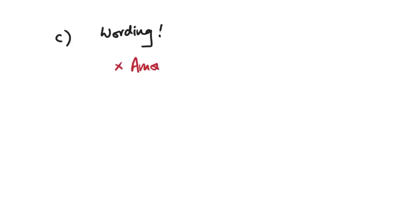Finally, some reminders about wording. One of the most important words to avoid is 'amount.' Many people say things like 'the amount of potatoes' or 'the amount of water' — don't use this word because 'amount' could mean many different things. Similarly, avoid saying 'how much.' In mark scheme guidance, examiners are specifically told to ignore the use of these words, so it's really important to know what to use instead.